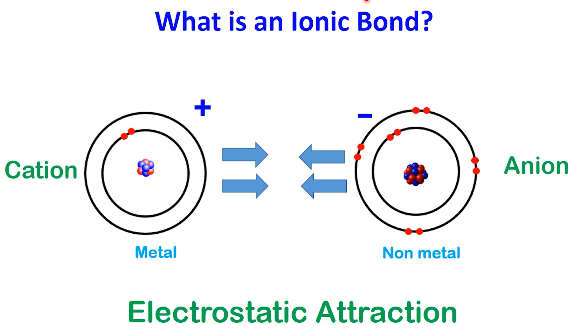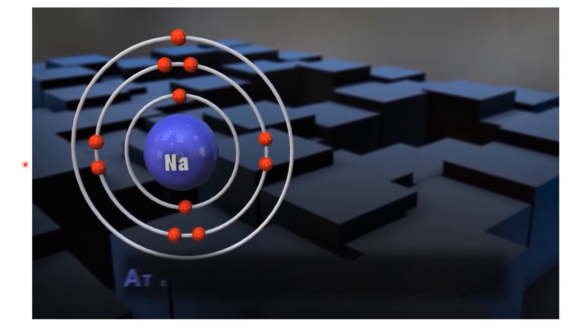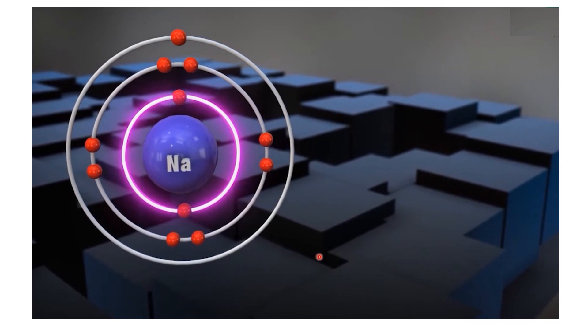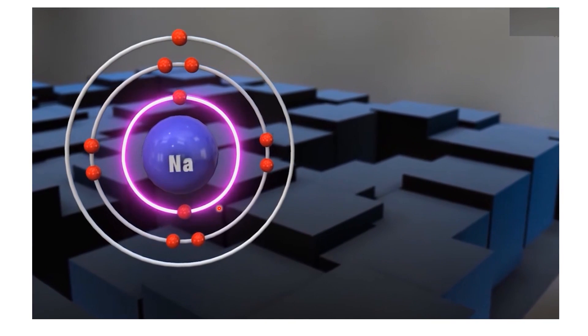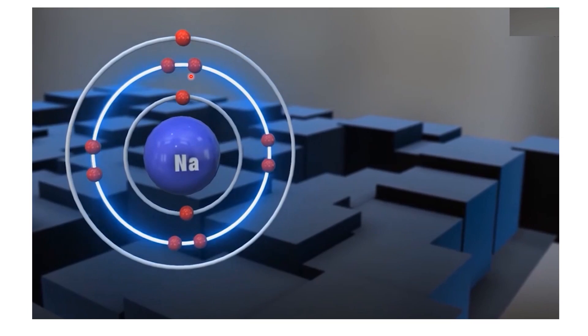To make this clearer, let's look at a classic example, sodium chloride, or what we know as table salt. A sodium atom has 11 electrons. Its electrons are arranged with 2 in the K shell, 8 in the L shell, and 1 in the M shell, which is its outermost shell.